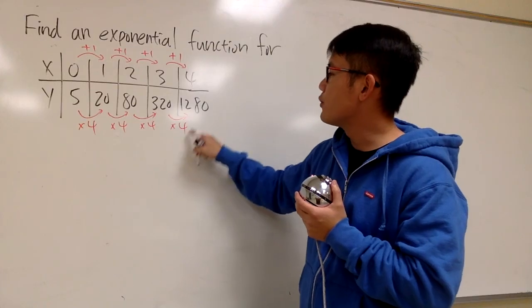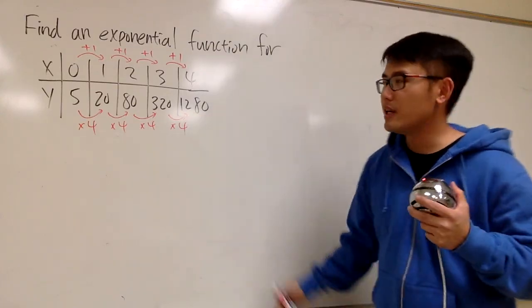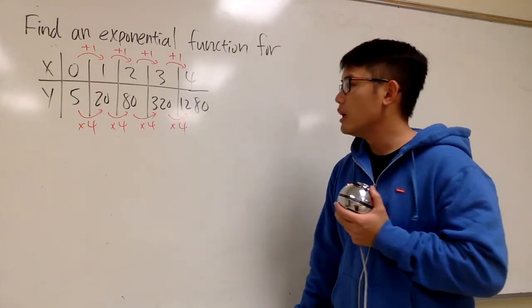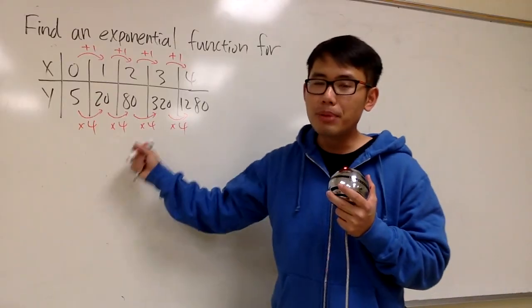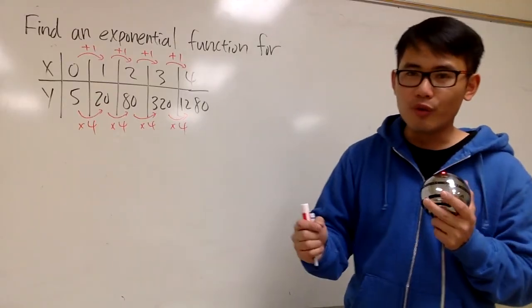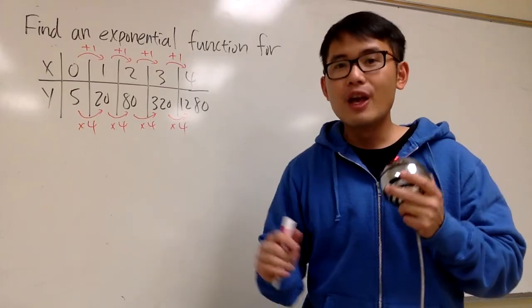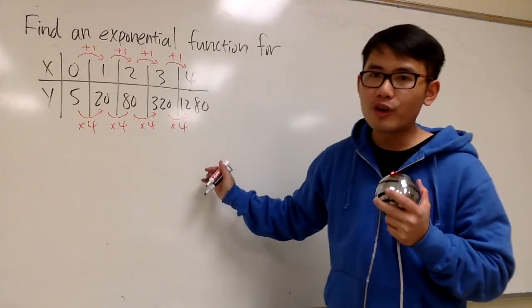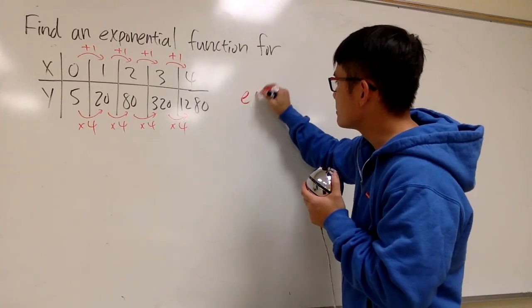Check this out. 320 times 4, we do get the 1280. And that's the same pattern, right? And this time, we are multiplying the same number over and over. The key is multiply. When you are multiplying the same number over and over, in this case, it is an exponential.